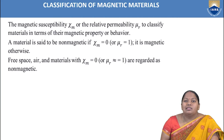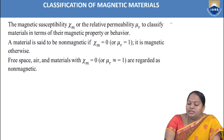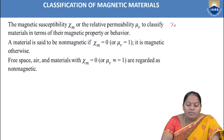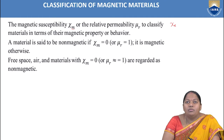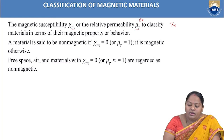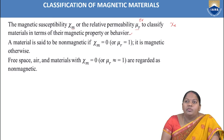Before going to discuss about magnetic boundary conditions, we will come to know how many types of magnetic materials there are and how the classification is done based upon which parameter. To classify materials in terms of their magnetic property or behavior, we have two fundamental terms: magnetic susceptibility χM and the relative permeability μR.